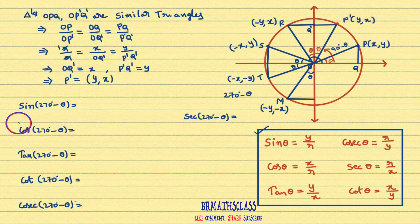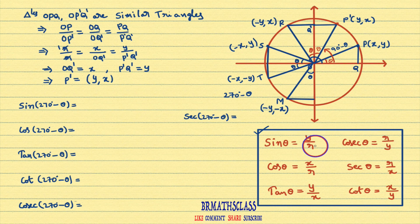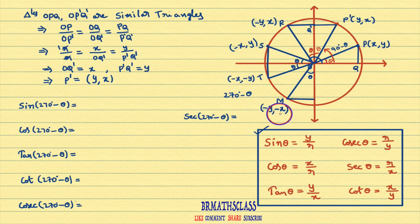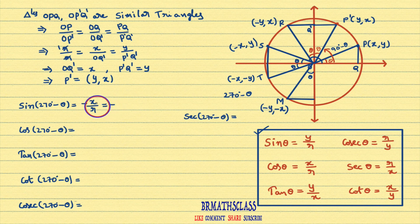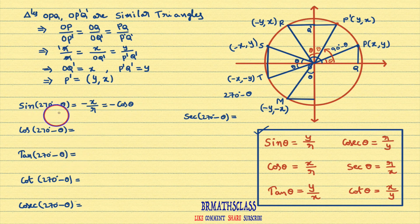Now, sin(270° - θ). Initially, sin θ is defined as the y-coordinate of the point divided by radius of the circle. sin(270° - θ) means the y-coordinate of point M divided by radius of the circle. The y-coordinate of point M is -x, divided by radius of the circle, that equals -x/R. x/R is cos θ. Therefore, sin(270° - θ) = -cos θ.